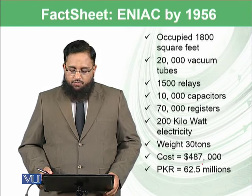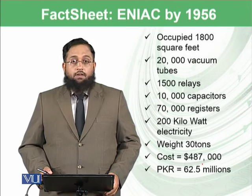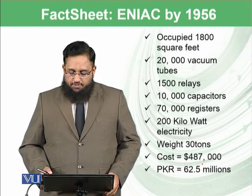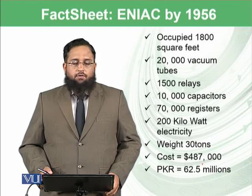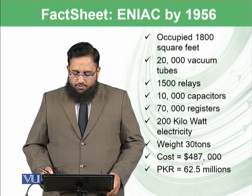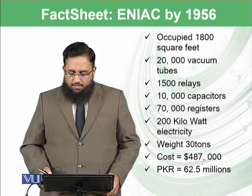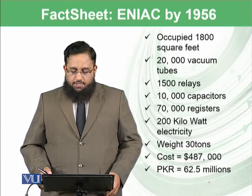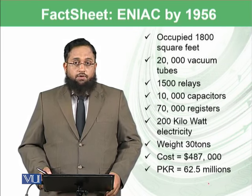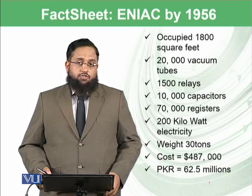ENIAC had 20,000 vacuum tubes, 1,500 relays, 10,000 capacitors, 70,000 resistors, and consumed 200 kilowatts of electricity. It weighed over 30 tons and cost the equivalent of 62.5 million Pakistani rupees at that time. It was not possible for individuals to purchase such a computer.